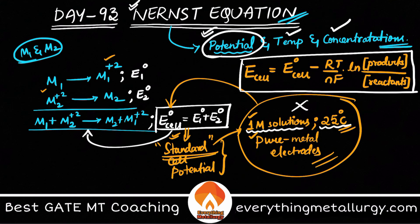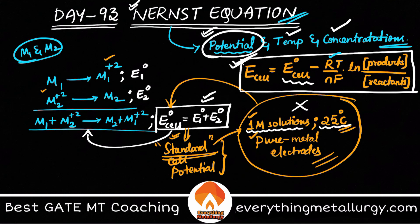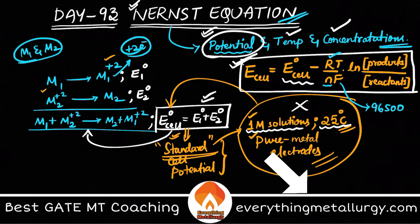This is how you see the change in cell potential. E°_cell is E1° + E2°. The other terms: R is the universal gas constant, T is the temperature, n is the valency — in our example n = 2 electrons — and F is Faraday's constant, which is 96,500 coulombs per mole.